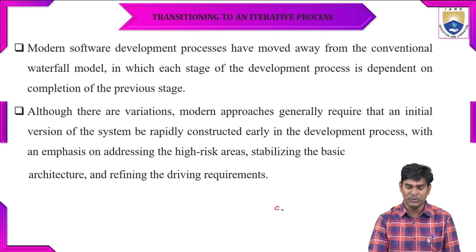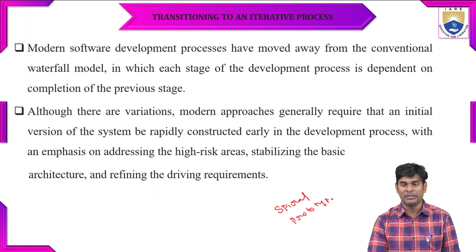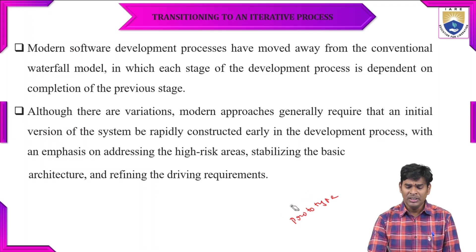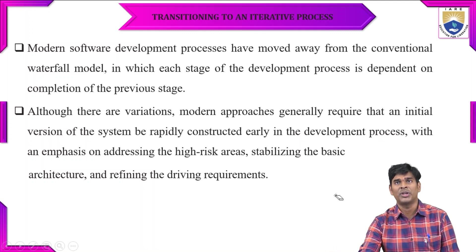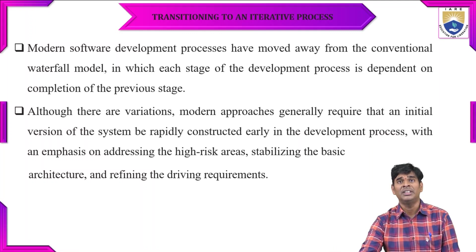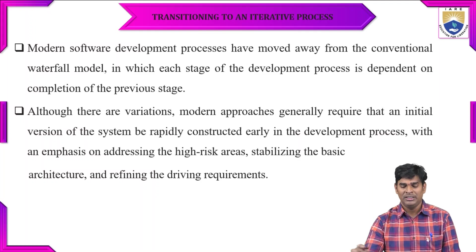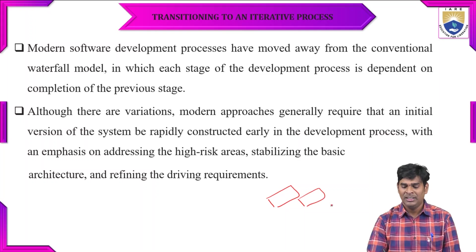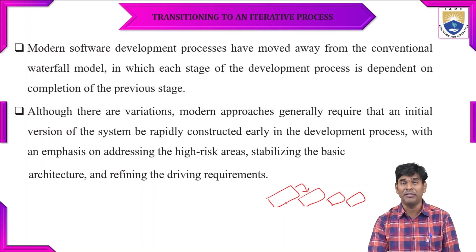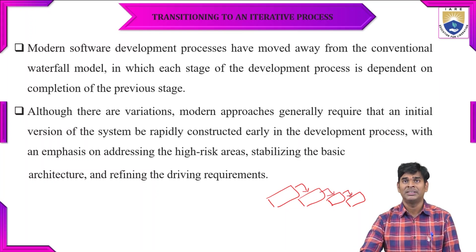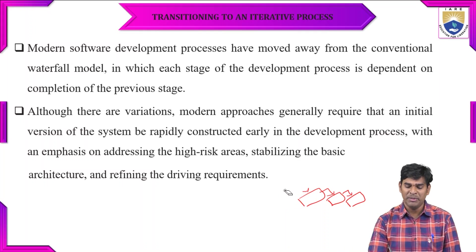This iterative process is similar to the spiral and the prototype model. In the iterative process, we are considering this modern software development as the 10-dimensional waterfall model. This will be dependent on the previous stage. We have different types of phases in the 10-dimensional waterfall model. Until completion of one phase, then only it will move to the other phase. Like that, each and every phase will be dependent on the previous stages. This is not independent; it is only dependent on the phases in modern software development.